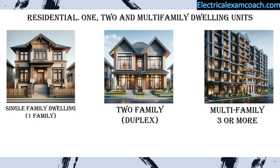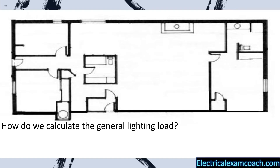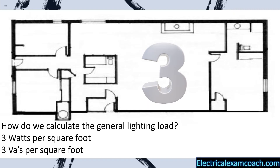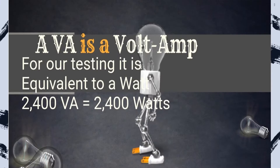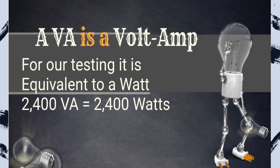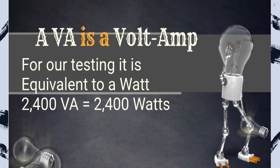The first question we have to ask is how do we calculate the general lighting load? Are we going to calculate it per receptacle outlet, per lighting fixture — do we have to count them all up? Thankfully, no — they've made it very simple. We're going to calculate it at three watts per square foot. So for all of the general lighting and all of the general receptacles, all we have to do is take the square footage of the dwelling unit and multiply it by three. The code language actually uses VAs — volt amps — so three VAs per square foot. For our testing, a VA is equivalent to a watt, so 2,400 VAs equals 2,400 watts.